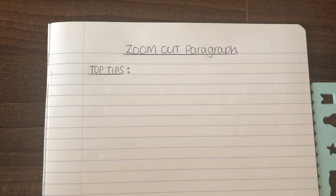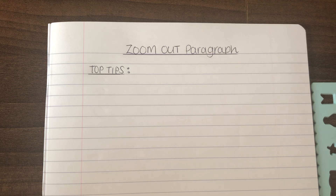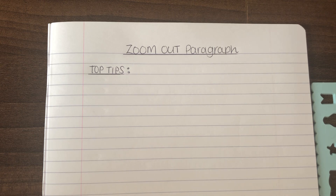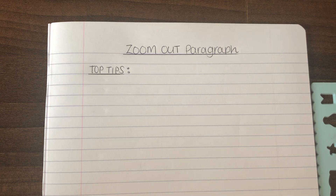As we've gone along we've looked at building up sentence starters, thinking about the vocabulary you use, the kind of figurative language — metaphors and similes — but also making sure you're following a sensible structure to your writing. So in this final paragraph, it's called the zoom out paragraph, and we're just going to talk through some tips for that.